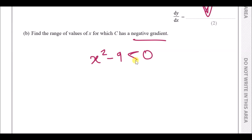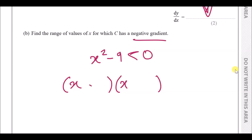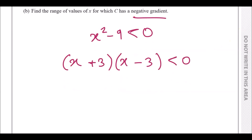Because this is a difference of two squares — x squared minus 9 — we can use the double bracket method. Square rooting both terms gives (x + 3)(x − 3), and this must be less than 0. We need to find which values of x between these critical values make this less than 0.